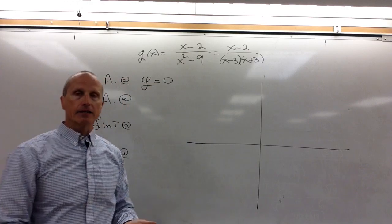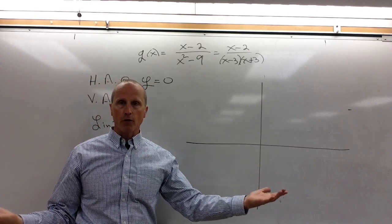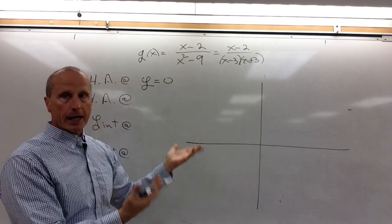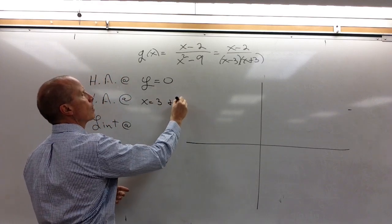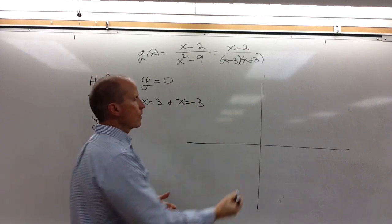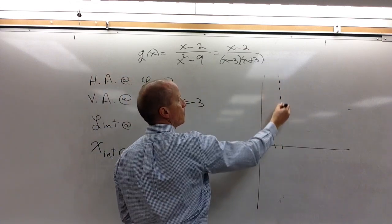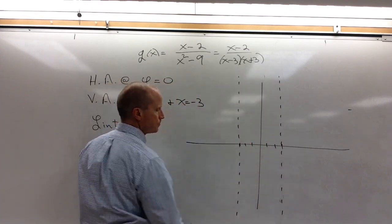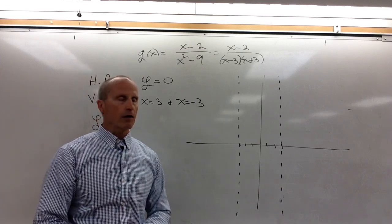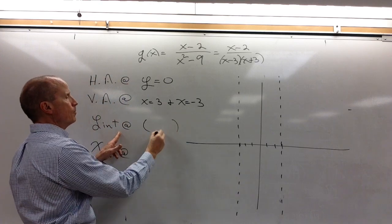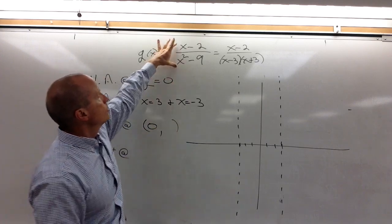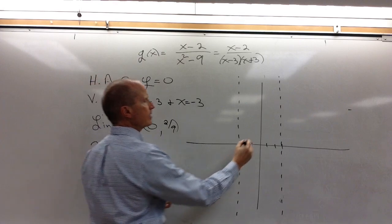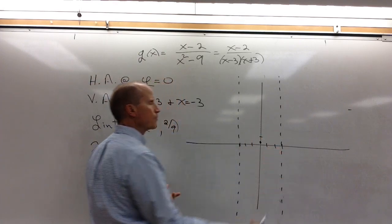The x-axis is acting as the horizontal asymptote — the end behavior of the graph. What values allow the denominator to be zero? In this case, 3 and −3. So we have two vertical asymptotes: one at x = 3 and one at x = −3. Now we have our vertical and horizontal asymptotes. The y-intercept — put zero in for x — gives us (−2)/(−9), or positive two-ninths. We'll estimate that on our graph.